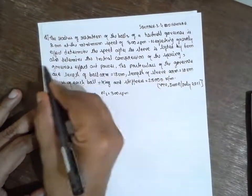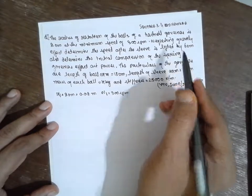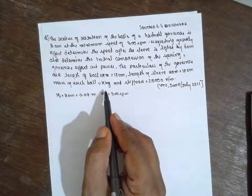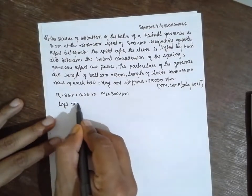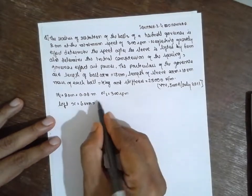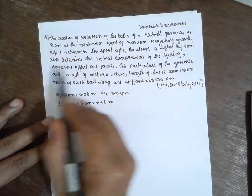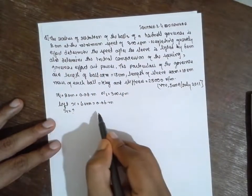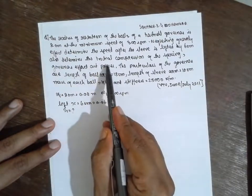Neglect gravity and determine the speed after the sleeve is lifted by 6 cm. The lift, X, is equal to 6 cm, or 0.06 meter. We also need to determine the initial compression S1 of the spring.